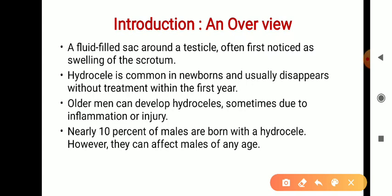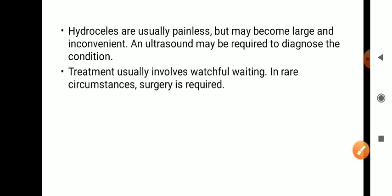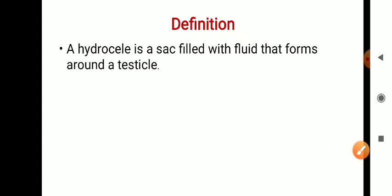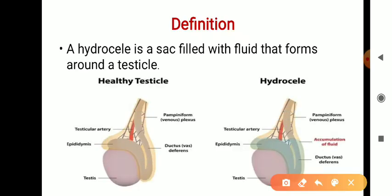Hydrocele is a fluid-filled sac around the testicle that leads to swelling in the scrotum. Nearly 10% of males are born with hydrocele, meaning it is a congenital disorder. In this picture you can see a normal side and an abnormal side, where there is accumulation of fluid around the testicle in the scrotum.